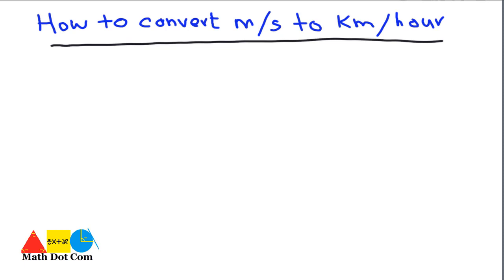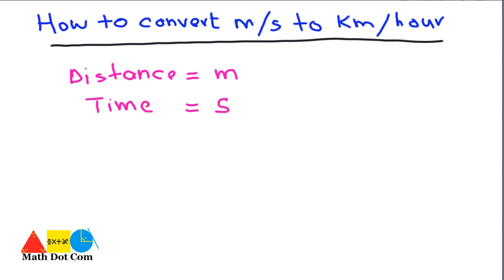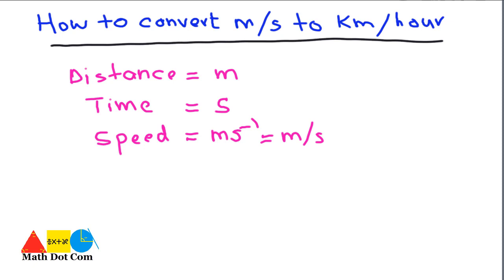Before that, you have to keep a few basic things in your mind. The basic unit of distance is meter and the basic unit of time is second. The unit of speed comes out to be meter per second. If you are asked to find the speed in kilometers per hour, let's find out how to do that.